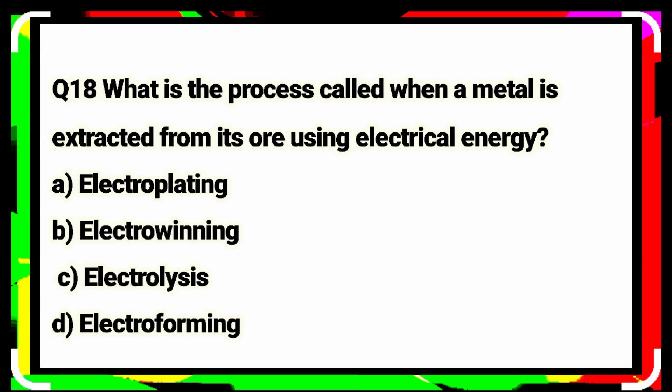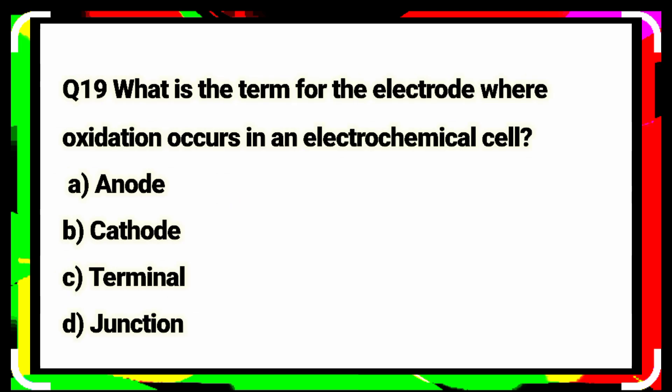Question number eighteen: what is the chemical formula of the electrode where reduction occurs in an electrochemical cell? Anode. Option A is the correct answer. Question number nineteen: what is the term for the electrode where oxidation occurs in an electrochemical cell? Anode. Option A is the correct answer.